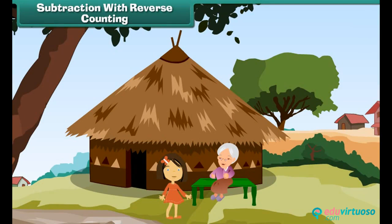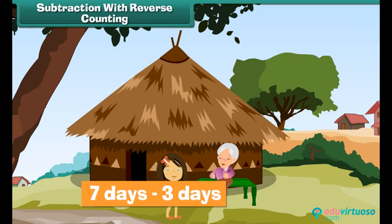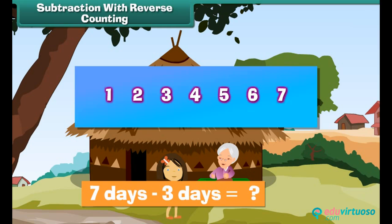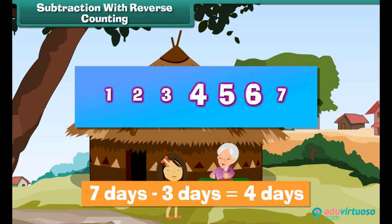Subtraction with reverse counting. Now let us attempt the same exercise counting backwards. Sanya is spending seven days with her grandmother in the village. She came to the village three days back. How many more days can she stay? Move backwards from seven and count three numbers because Sanya has already spent three days in the village. She can spend four more days with her grandmother.